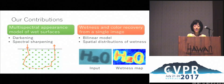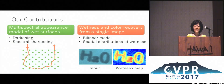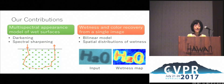Then, based on our multispectral appearance model, we derive a method for simultaneously estimating the degree of wetness and the dry colour of the surface from a single multispectral image.